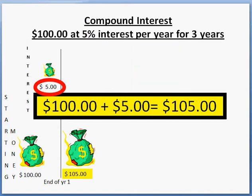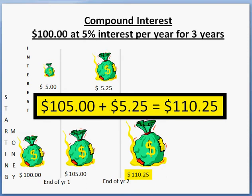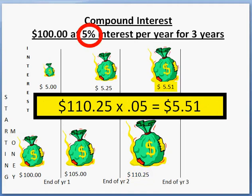That will give us $5 interest earned during the first year. So at the end of the first year, we don't have $100 anymore — we now have $105. During the second year, we're going to earn 5% on that $105. Multiplying 105 by 0.05, we get interest of $5.25 this time, and adding it to the $105 we had at the beginning of year 2, we now have a total of $110.25 at the beginning of year 3.